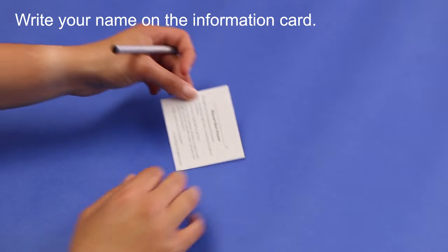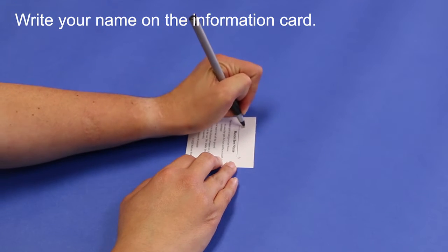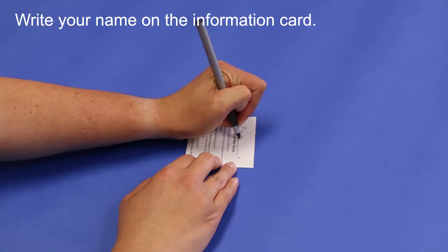The first step is to write your name on the information card that will accompany each of the Mason Bee Houses.